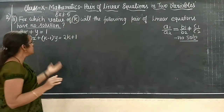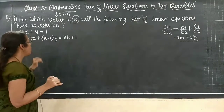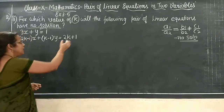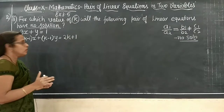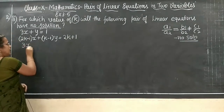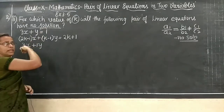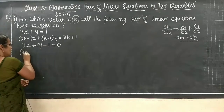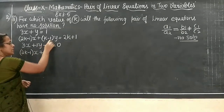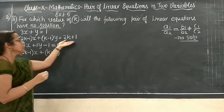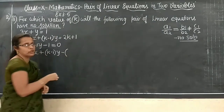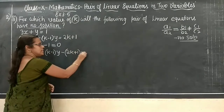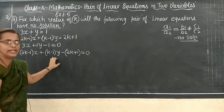First, bring everything into the same form — the general form. We need a general form of the linear equations. For that, bring the terms over: plus 1 becomes minus 1, and 2K+1 brought here becomes minus (2K+1). So the first equation becomes 3x + y − 1 = 0, and the second becomes 2K − 1 terms giving 2K + 1 = 0. This is the standard form of the pair of linear equations.